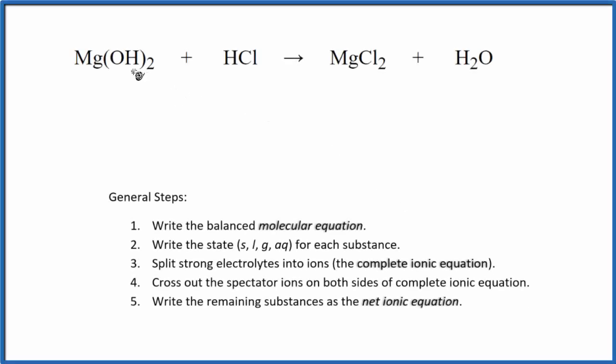To write the net ionic equation for Mg(OH)₂ plus HCl, we have magnesium hydroxide plus hydrochloric acid. We use these rules here. First thing we need to do is balance the equation. It looks like we need to put a 2 here and then a 2 over here. That would balance the molecular equation.